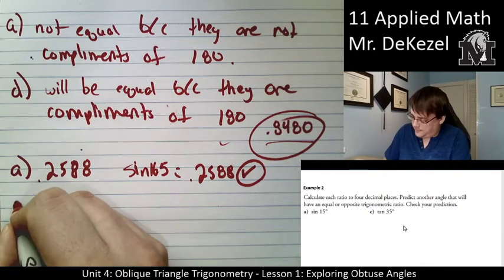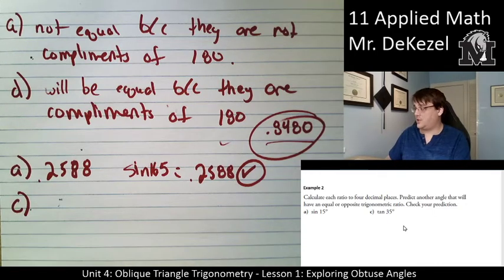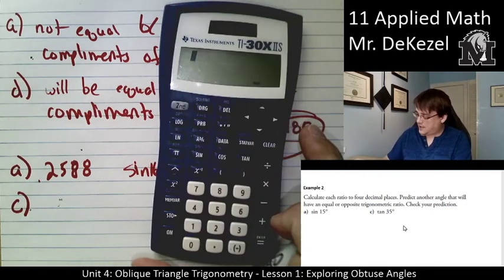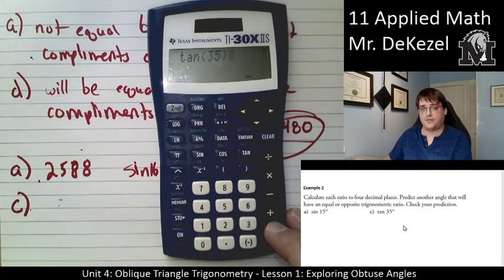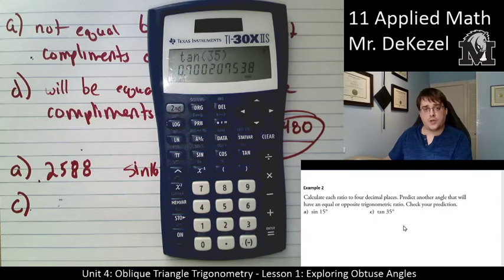Let's see if we can do the last one here on the bottom. We have C, which is tan of 35. Let's do the tangent of 35. I've been hitting a sine too much. Let's do tan of 35. .7002.